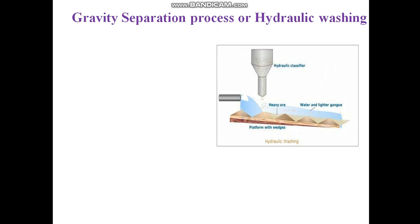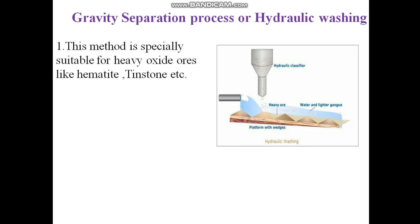Here is another method in a similar form. This is the hopper, and this is the platform with wedges — the ups and downs we can see in the diagram. The heavier ore is settled in between these platforms, whereas the lighter gangue or ore particles can be removed and collected in another tank. This is also one of the methods we can use, which is also called hydraulic washing.